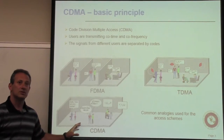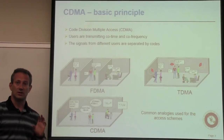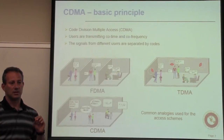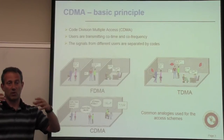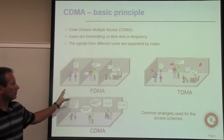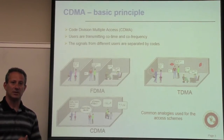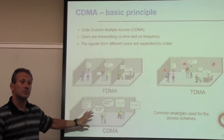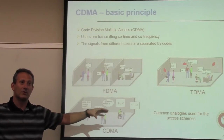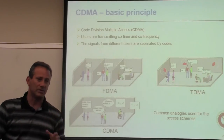In CDMA, everybody's in the same room, everybody's talking at the same time, but they're using different codes. Their conversations are encoded in a specific way using orthogonal codes, so that the receiver can extract information pertinent to a particular conversation by correlating all signals with the appropriate code. Out of all three analogies, this one is the most appropriate. A lot of things about CDMA can be understood intuitively by going back to this room — sometimes also referred to as a cocktail party, where you have a lot of conversations going on at the same time.